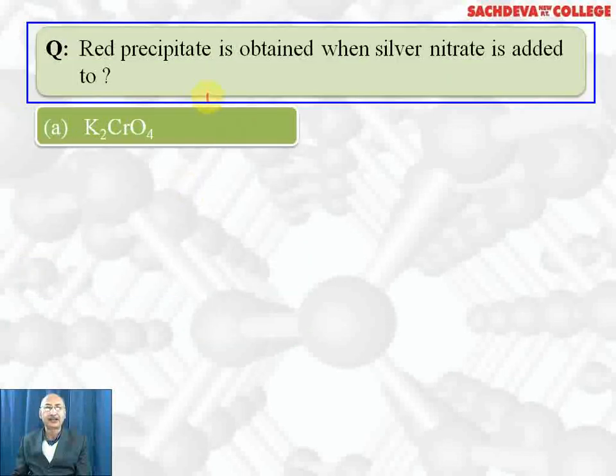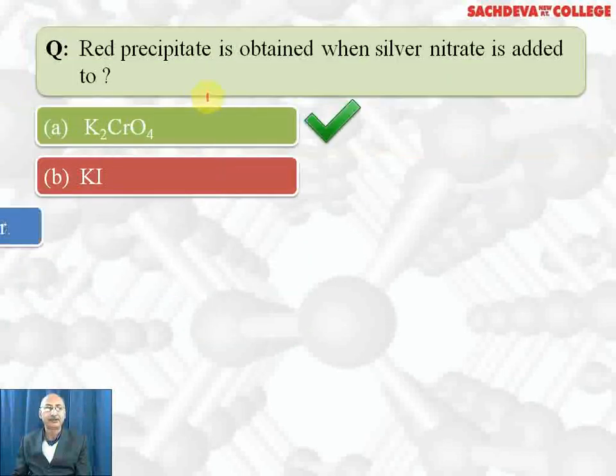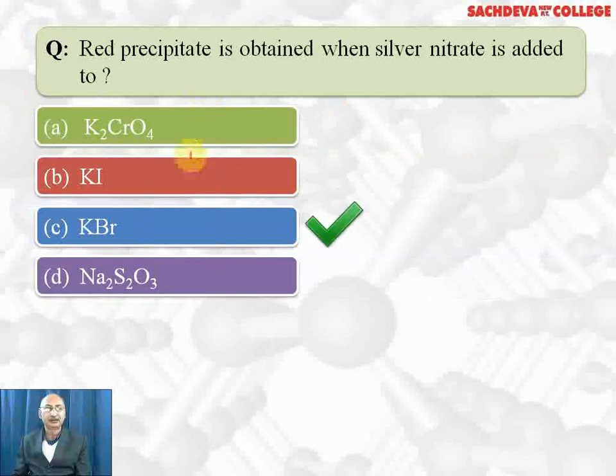Red precipitate is obtained when silver nitrate is added to K2CrO4, KI, KBr, Na2S2O3. Correct answer is A part because silver chromate is red precipitate, Ag2CrO4. With KI we get yellow precipitate AgI, and with sodium thiosulfate it will form a soluble complex.